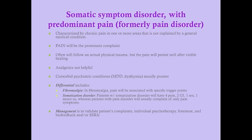Analgesics are not helpful in somatic symptom disorder with predominant pain. Comorbid psychiatric conditions are usually present, such as major depressive disorder or dysthymia. The differential can include fibromyalgia — where the pain is associated with specific trigger points — and that's a big deal, because fibromyalgia is not a somatic symptom disorder. Whereas we used to have somatization disorder and pain disorder as two separate entities, we now recognize they're very similar, so we've collapsed pain disorder into being a subset of somatic symptom disorder.